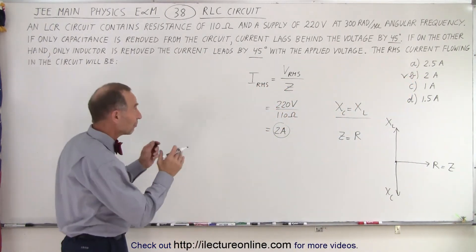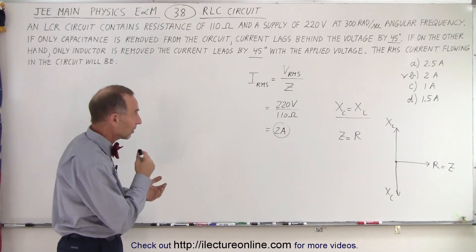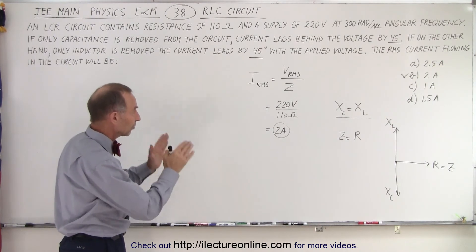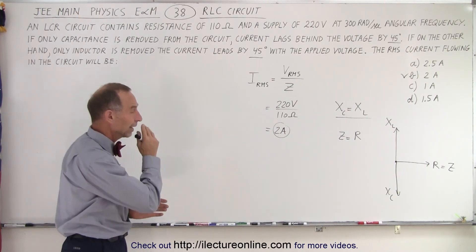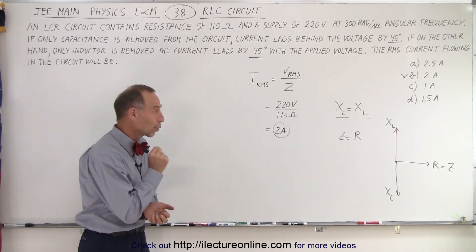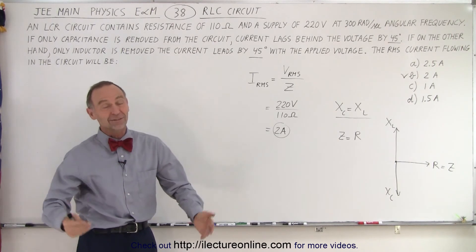So very quickly, by the information given, we realize that the reactance of the capacitor is the same as the inductive reactance, therefore, they cancel each other out. Impedance is resistance, V over R, and we get the answer. We'll move on to the next problem. So this one can be done quickly once you realize that that's the case. And that is how it's done.